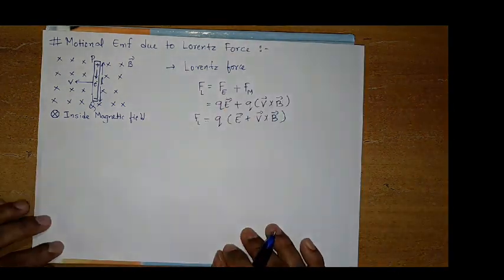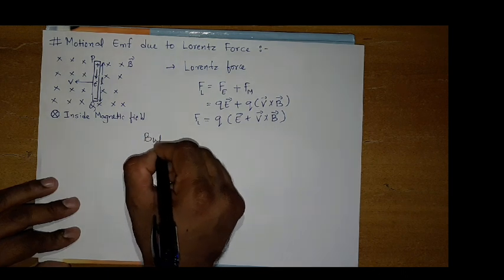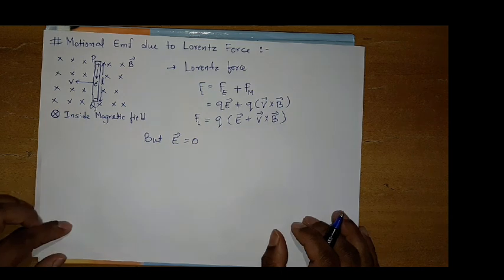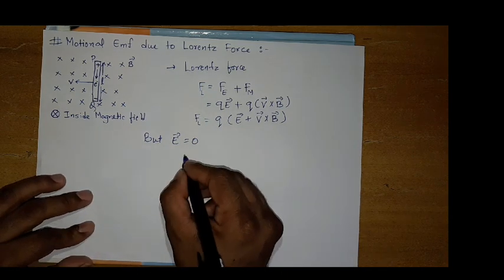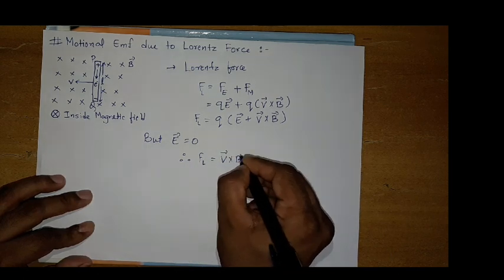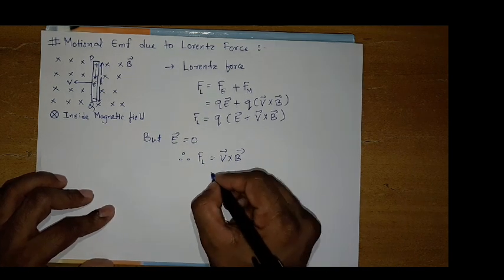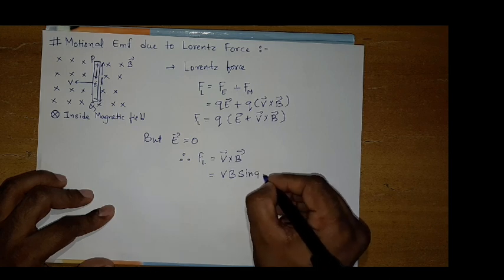Now, but in this condition, we have electric field E is equal to 0 means there is no electric field. So electric field value become 0. Therefore, this equation looks like FL is equal to V cross B. FL is equal to V cross B, which is further looks like VB sin 90. Why 90?